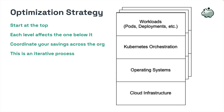We take a top-down approach to optimizing Kubernetes infrastructure. Improving the efficiency of containers affects the efficiency of pods, which in turn affects the efficiency of clusters. Once you've started optimizing your Kubernetes infrastructure, you can investigate higher levels of cost reductions like reserved instances and other commitment-based savings. This is an iterative process—you're never quite done.